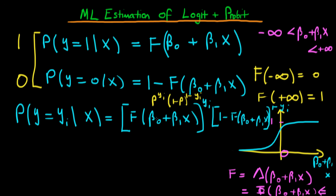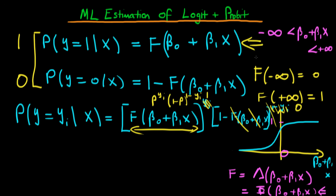Why is this likelihood function correct? If y_i equals 1, then the first term has exponent 1 and the second term has exponent 0, making the second term equal to 1. So we're just left with f(beta 0 + beta 1 * x), which is exactly the probability that y_i equals 1 given x.